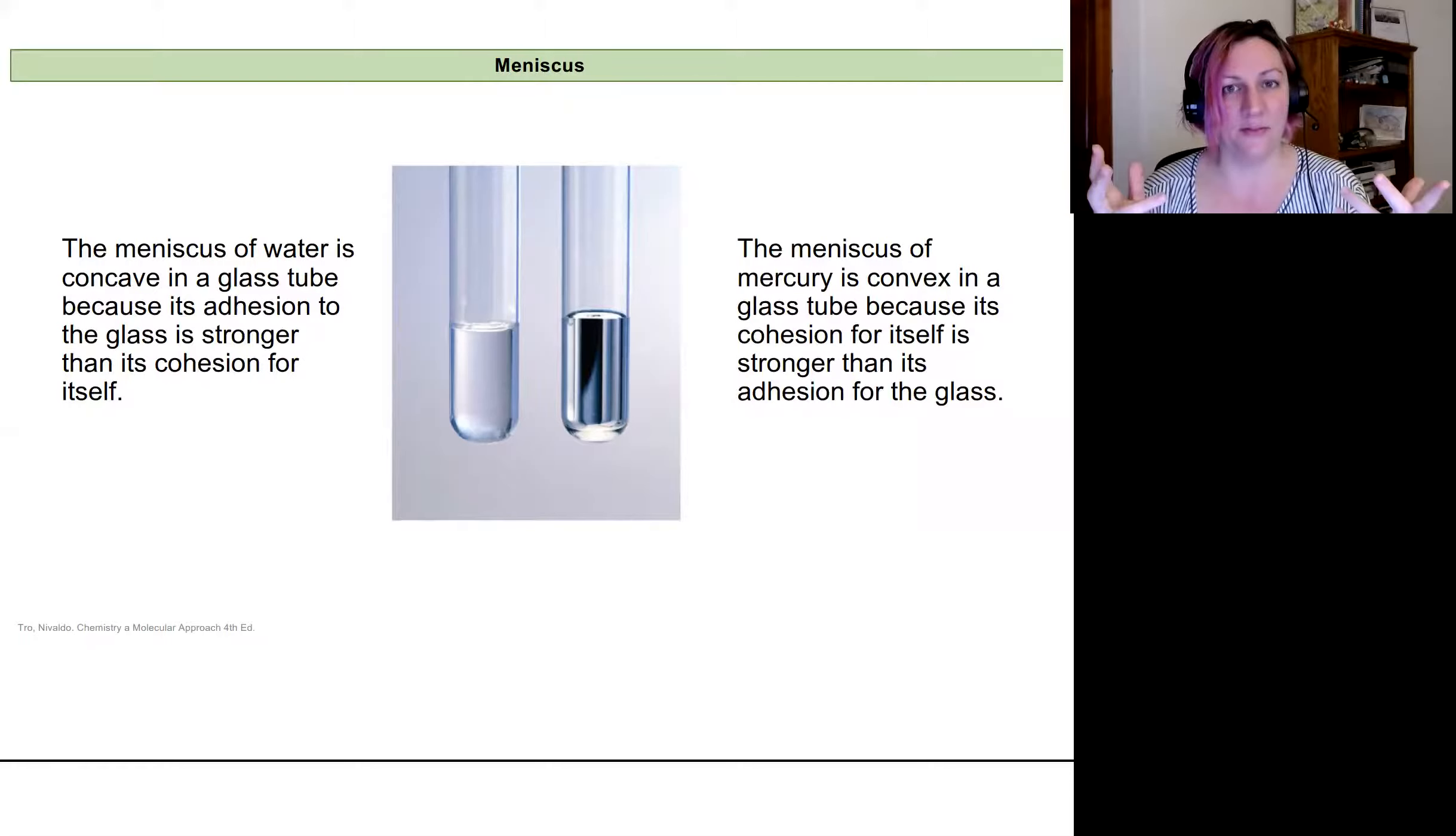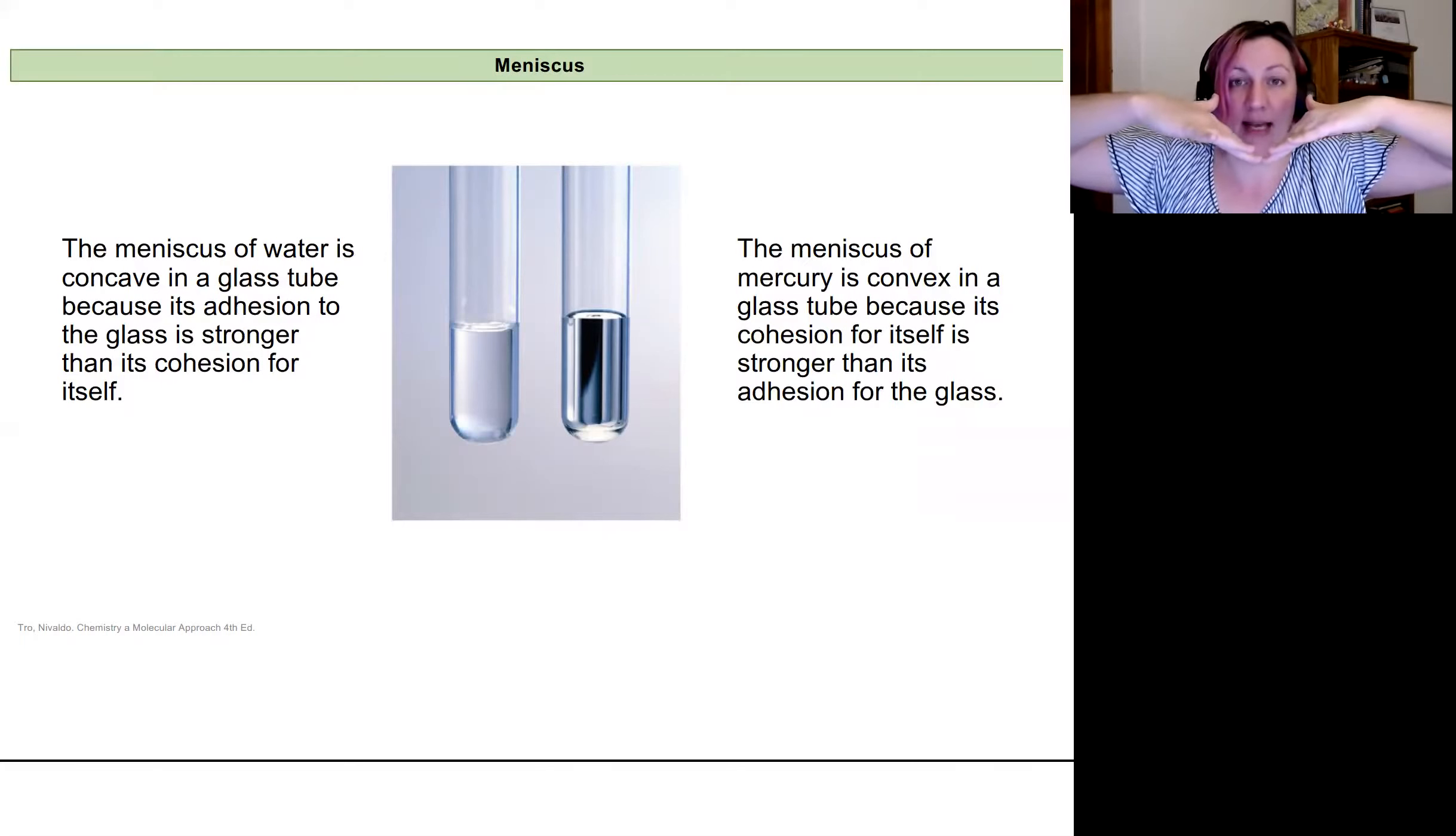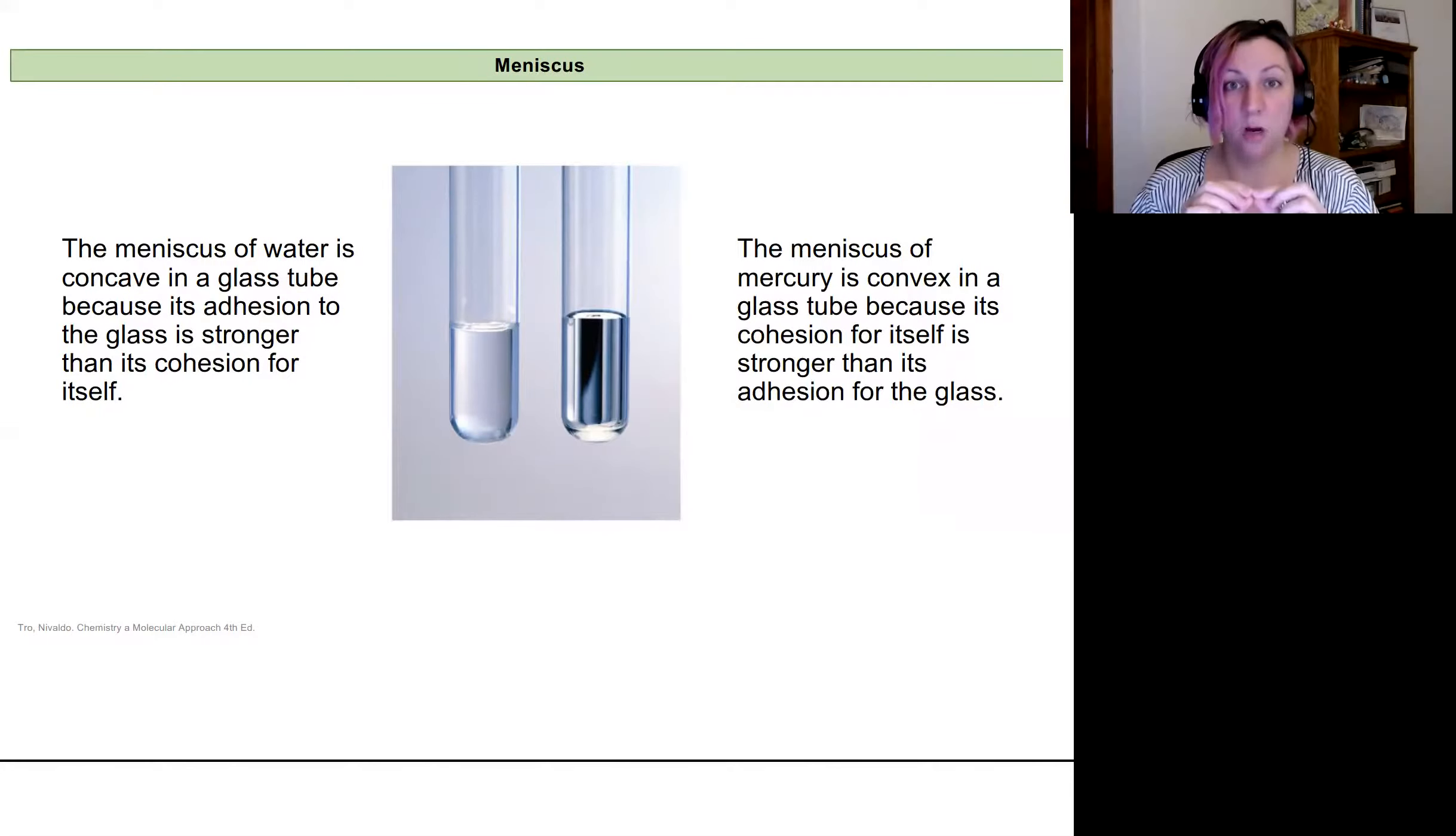But that's really a reflection of its cohesive and adhesive forces. So because the water creeps up the sides and creates this concave meniscus, it means that the water molecules on the surface of the water are more attracted to the glass tube than they are to each other.